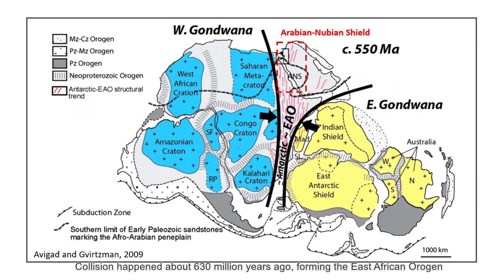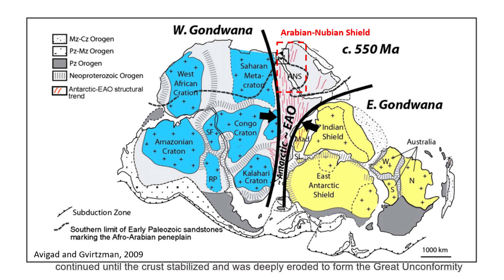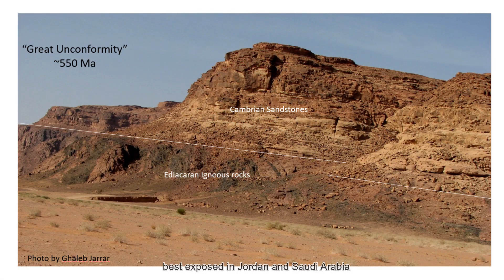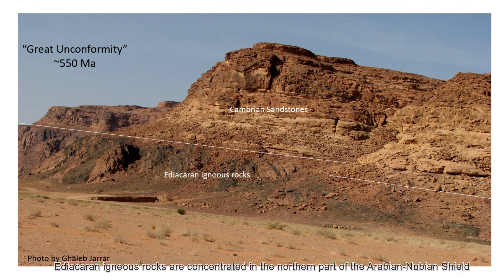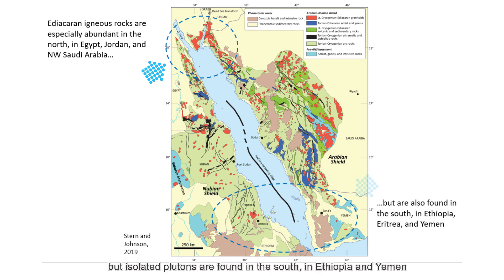Collision happened about 630 million years ago, forming the East African Orogen, of which the Arabian Nubian Shield is the northernmost portion. Post-collisional processes, including formation of the Ediacaran igneous rocks that we are interested in, continued until the crust stabilized and was deeply eroded to form the Great Unconformity, best exposed in Jordan and Saudi Arabia. Ediacaran igneous rocks are concentrated in the northern part of the Arabian Nubian Shield, but isolated plutons are found in the south, in Ethiopia and Yemen.